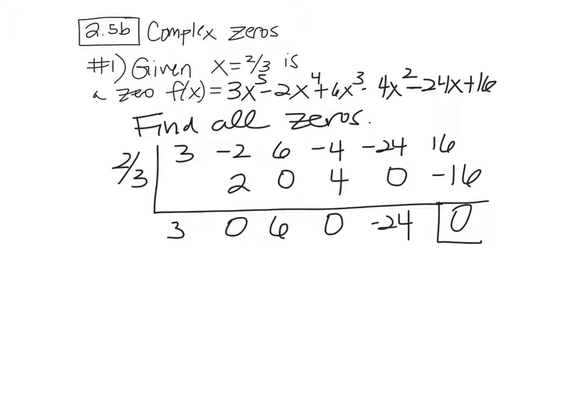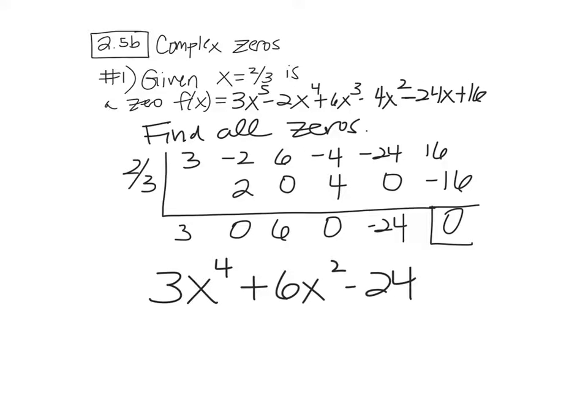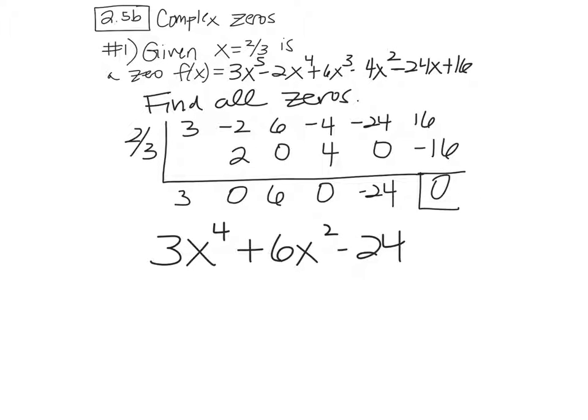Okay, so what we end up with is 3x^4 + 6x^2 - 24. Okay, and now what we're going to do is we're going to factor that. So let's first factor out the GCF. Does it have a GCF? Yeah, 3.